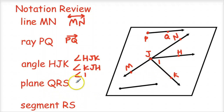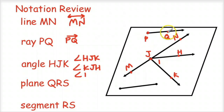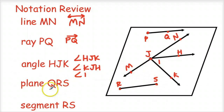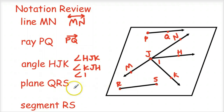Next I want to identify plane QRS. A plane can be identified either by three points on the plane or a script capital letter. I already see points P and Q on the diagram; I'll call the points down here R and S. So now I have plane QRS. This plane could have many different names — I could call it MJK, QNH, JHK — as long as I'm using three points that are all on that same plane.